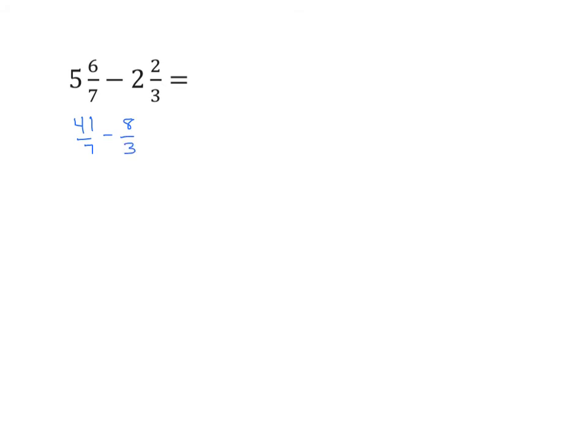Again, not huge numbers, but we're getting into numbers where you might have to do some calculations. And let's now set it up using the newer approach where we subtract the wholes first. So I'll rewrite that expression, 5 and 6 sevenths minus 2 and 2 thirds.